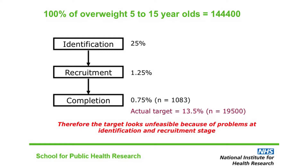Local areas that had gone some way into delivering this intervention were reporting big problems actually recruiting even the people they'd identified as overweight. People didn't want to take part, and sometimes their parents didn't either. We estimated that about one in 20 people approached would actually say yes. There were also further dropouts during the intervention itself, so not everybody completed.